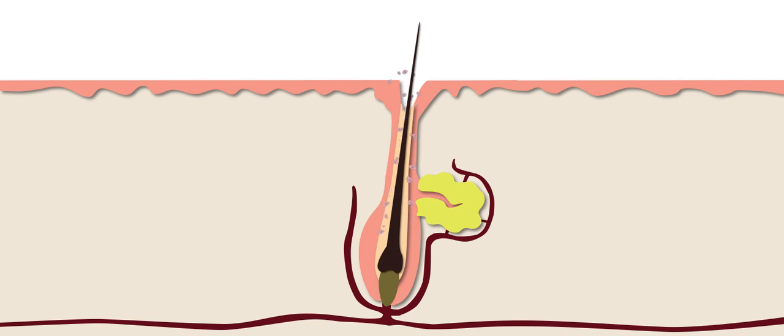In acne, the cells lining the follicle wall produce too much keratin, a substance that helps protect the skin from damage. This excess keratin can cause the dead skin cells to stick together, making them harder to expel from the follicle.